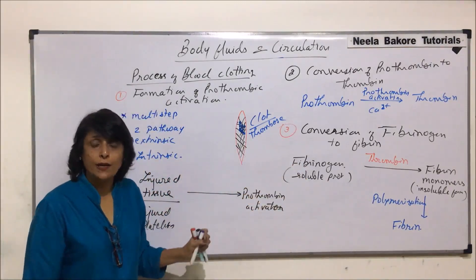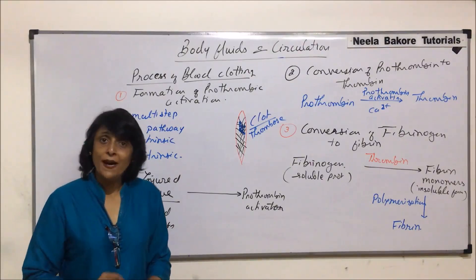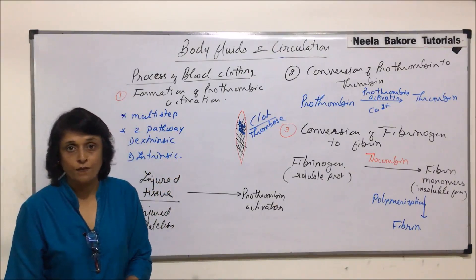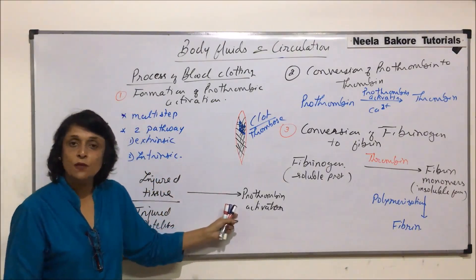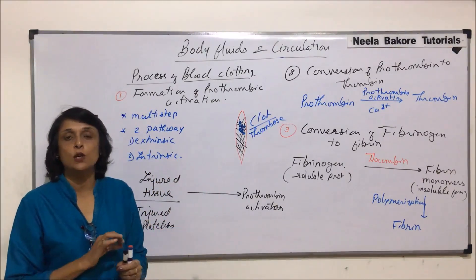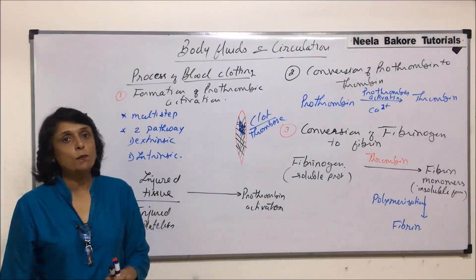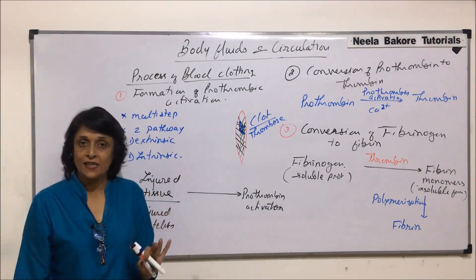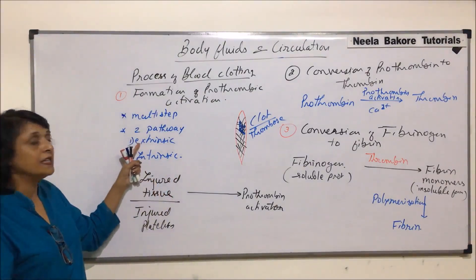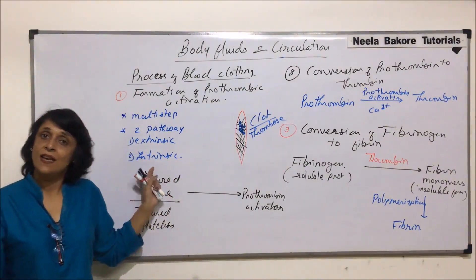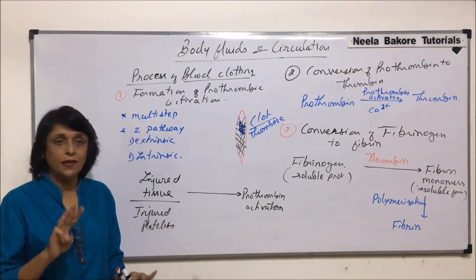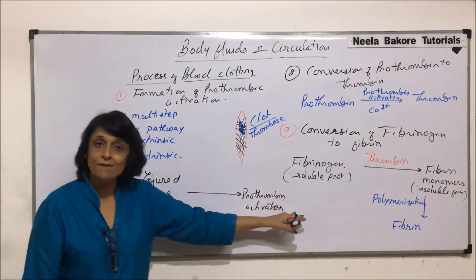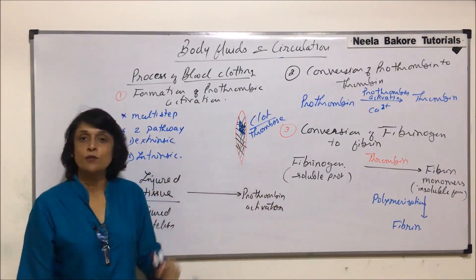This is how we can explain the process of clotting in short, but it is not a simple three-step reaction — there are multiple steps involved. In the next segment we'll talk about all those individual steps, the involvement of all 13 factors, and we will also understand the cascade mechanism. We will see the details of extrinsic as well as intrinsic pathways. To sum up: first prothrombin activator, then thrombin, then fibrin, and fibrin forms the clot.